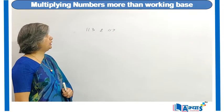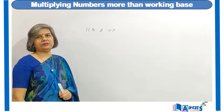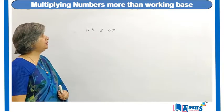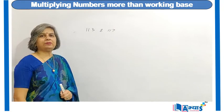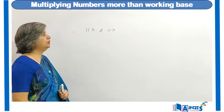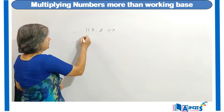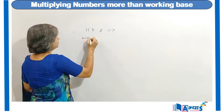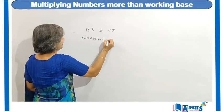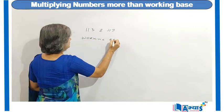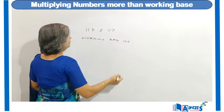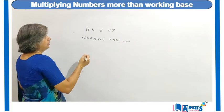Suppose we are given two numbers: 113 and 117. We have to multiply these two numbers without actual multiplication, because performing actual multiplication will take a longer time. Both numbers are greater than 100, so the working base will be 100.